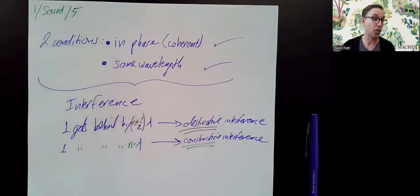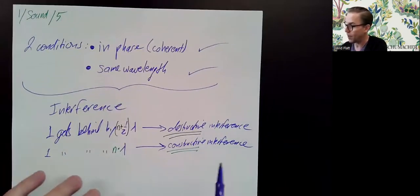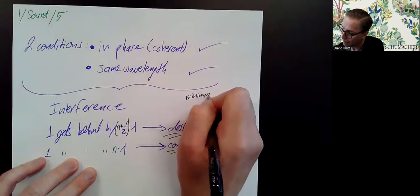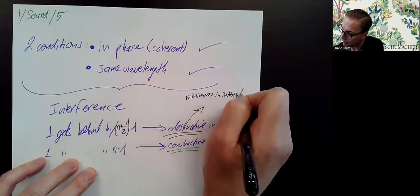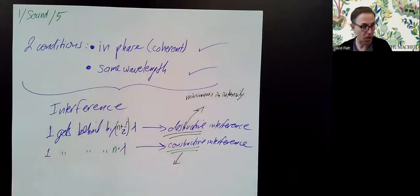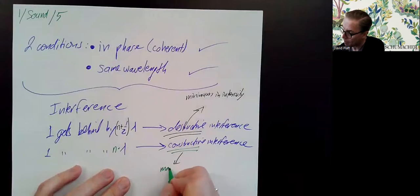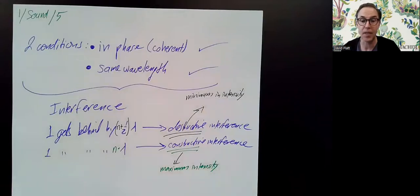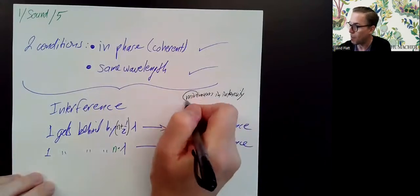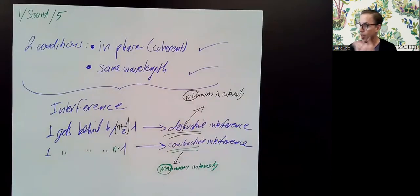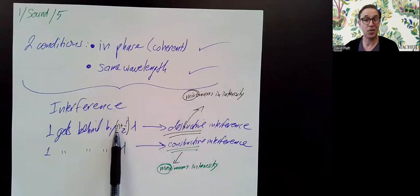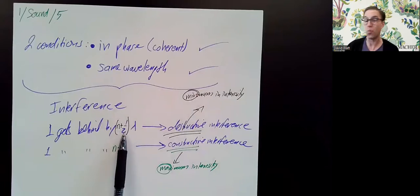A little vocabulary: destructive interference is sometimes called producing a minimum in intensity or minimum in loudness. Constructive interference is sometimes called maximum intensity or maximum loudness. So maximum or min go with constructive and destructive interference respectively. Constructive means one wave got behind by an integer number of wavelengths; destructive, or a minimum, means one wave got behind by an integer plus one-half wavelengths — one and a half, two and a half, three and a half, or just one-half wavelength.